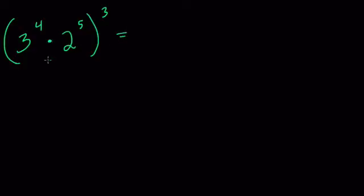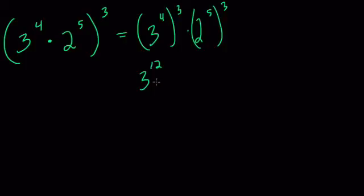Well, now when you have a product of two different bases inside the exponent, this exponent 3 applies to both. So you can think of this as 3 to the 4th to the 3rd power, times 2 to the 5th to the 3rd power. And that equals 3 to the 12th times 2 to the 15th. So you can break that down piece by piece.